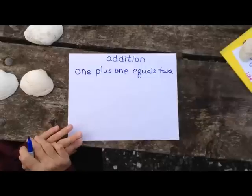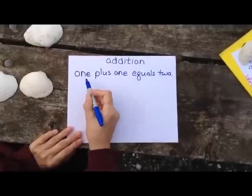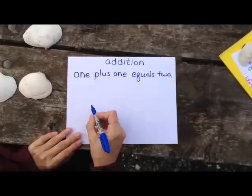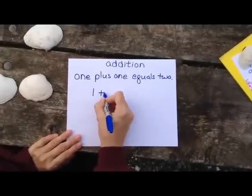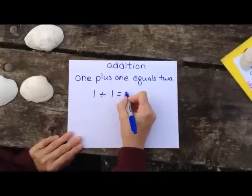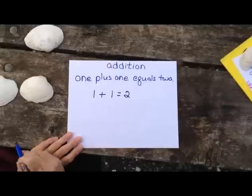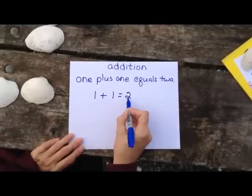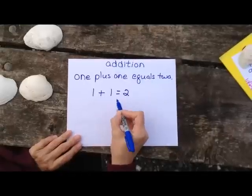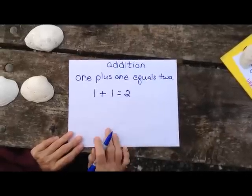I use the same language whether I write the problem with words or with numbers. One plus one equals two. These are the numbers one and two. This is a plus sign. This is called an equal sign.